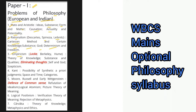Then we have empiricism — theory of knowledge, substance and qualities, eliminating thoughts, self and God, skepticism. The next portion deals with Kant's different theories, including the possibility of synthetic a priori judgments, space and time, and categories. Then we have Moore, Russell, and early Wittgenstein — concepts of defence of common sense, refutation of idealism, logical atomism, picture theory of meaning. Next, logical positivism — verification theory of meaning, rejection of metaphysics.